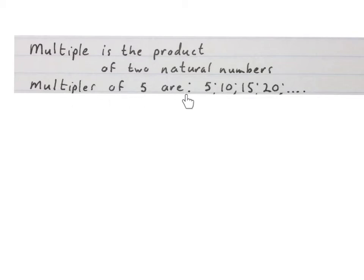A multiple is the product of two natural numbers. The multiples of 5 are 5, 10, 15, 20 and so on to infinity.